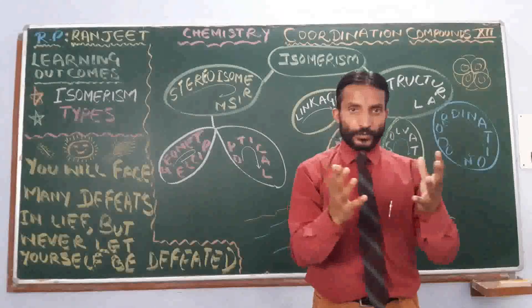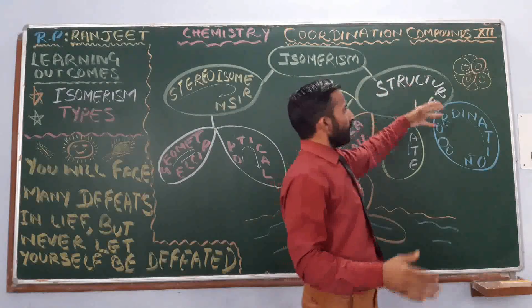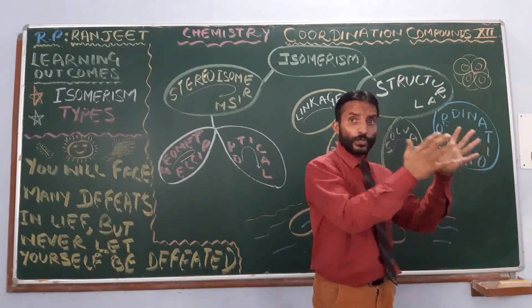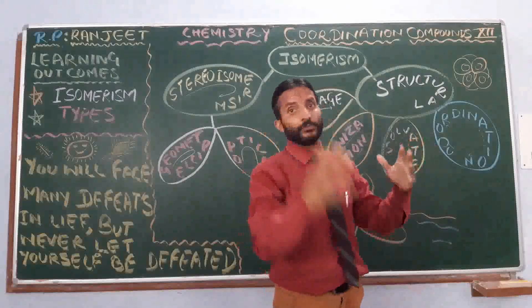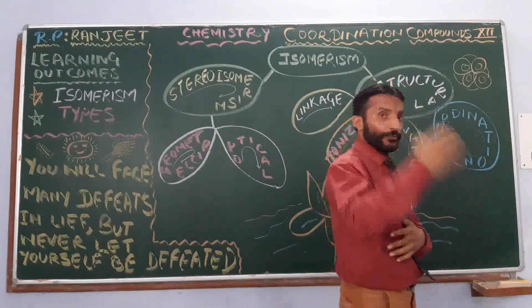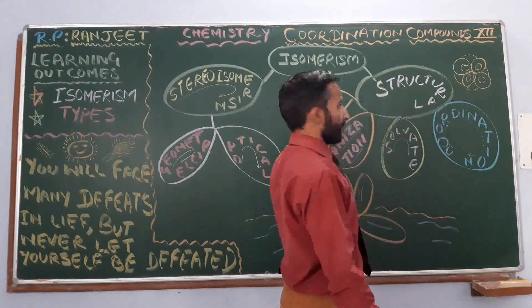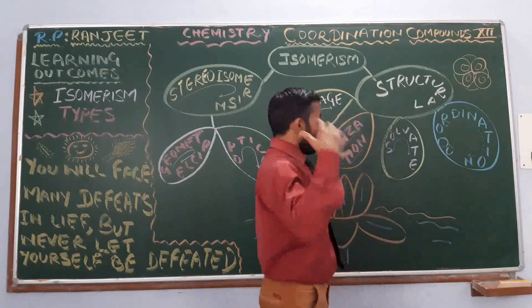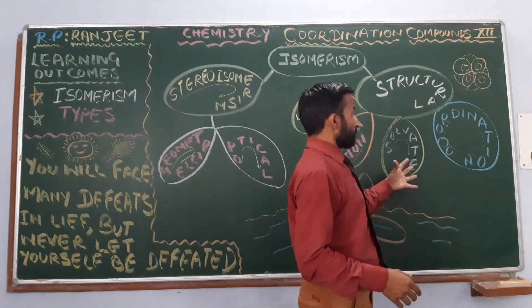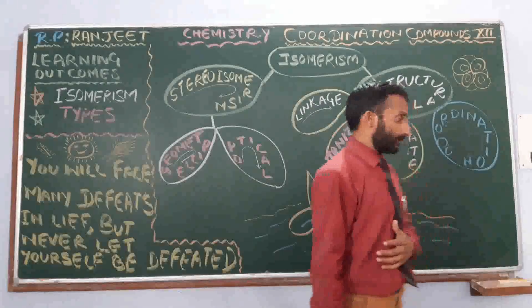Structural isomerism — here there is a difference in the structures of different compounds. It is further divided into four different types: linkage isomerism, ionization isomerism, solvent isomerism, and coordination isomerism.